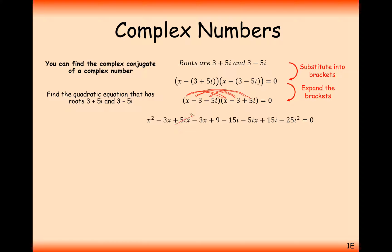You'll see here that lots will cancel, so we'll have plus 5ix and minus 5ix. We'll have minus 15i and positive 15i, and the i squared here will simplify to minus 1. So we can simplify this to x squared minus 6x plus 34 equals 0. This is the quadratic that will give us these two roots.